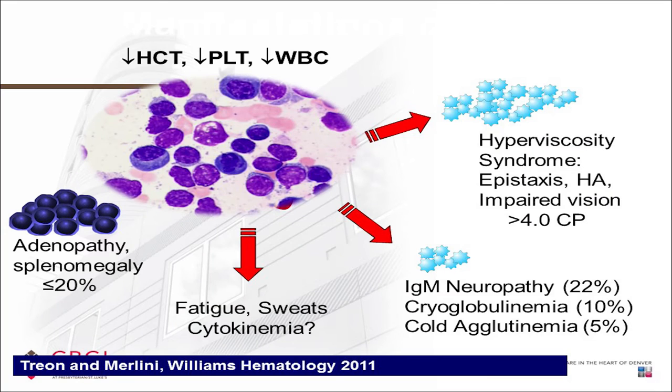Hyperviscosity is when you have so much IgM in your blood — more common in older WM patients — that you get nosebleeds, headaches, impaired vision, confusion, and reduced sharpness. Sometimes when people are first diagnosed, they're diagnosed because of hyperviscosity. And sometimes doctors can inadvertently cause hyperviscosity in their WM patients, so we have to be very careful about that.